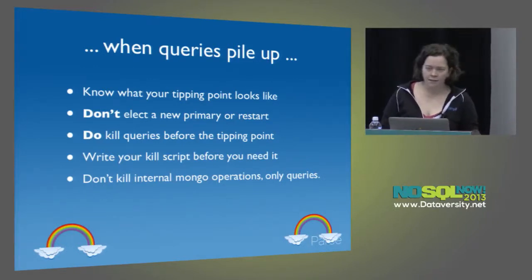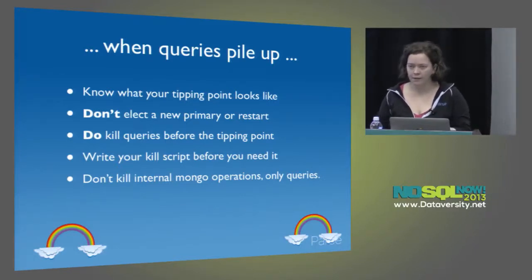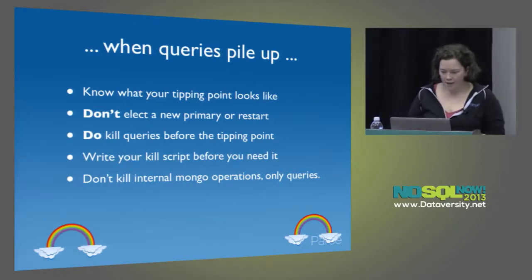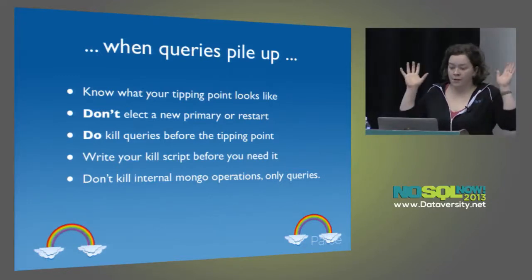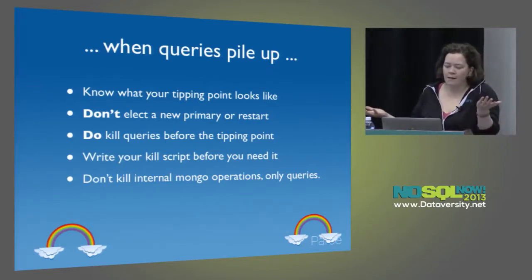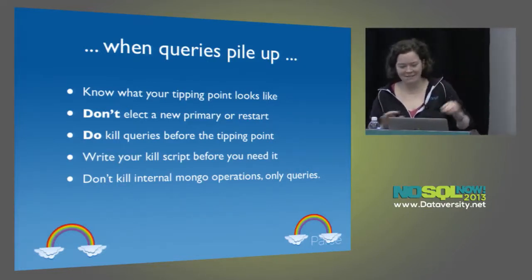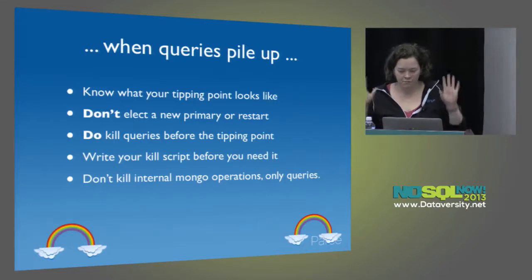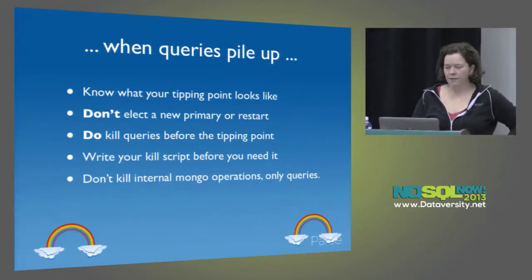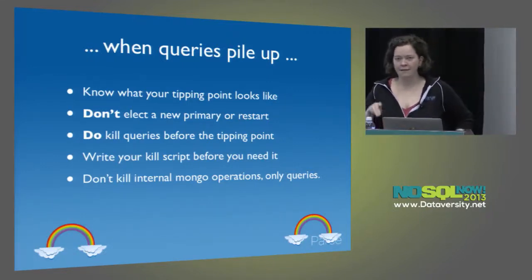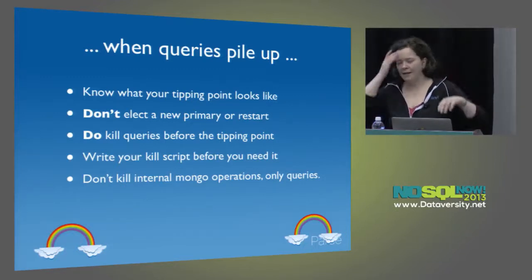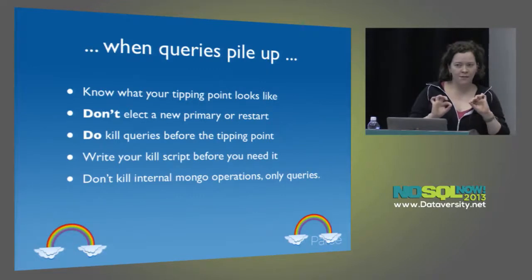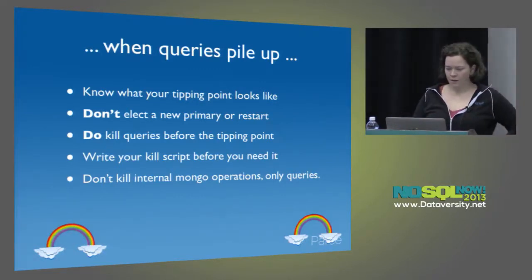You really shouldn't kill writes of any sort — don't kill anything that is an insert or has a write lock. Only kill things that have a read lock. Never kill your slaving threads. You can permanently damage your secondaries by killing your op-log tailers. Don't kill any internal MongoDB operations — only kill your client queries. Don't kill index builds unless you have to. Killing write ops in general can kill your secondaries occasionally in unrecoverable ways, and you can find your secondaries dying weeks down the line due to certain Mongo bugs — most of which I think have been fixed in 2.4.